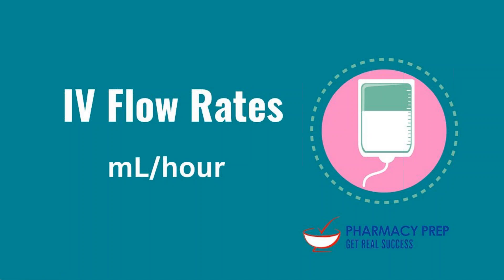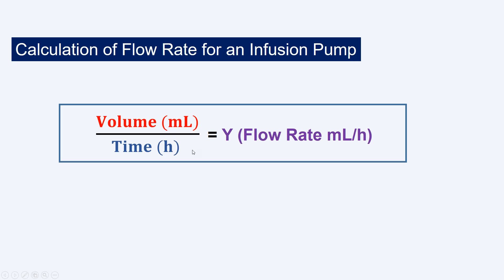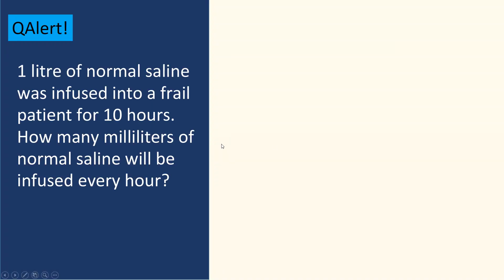Let's take another example for IV flow rate. IV flow rates for infusion pumps are measured in mLs per hour — how many mLs of IV are infused in one hour. For infusion pumps, the formula is simply volume in milliliters divided by time in hours, which gives you the flow rate in mLs per hour. There is no drop factor needed, since infusion pumps don't use drops per mL.